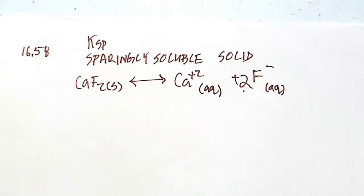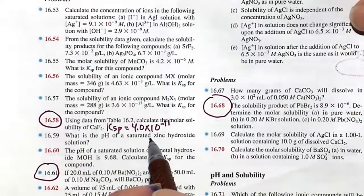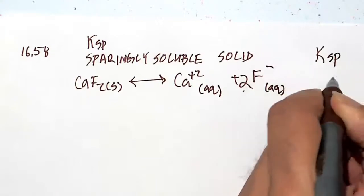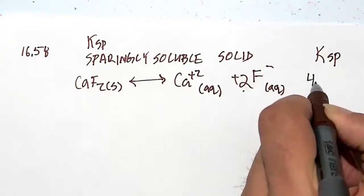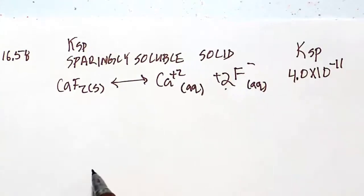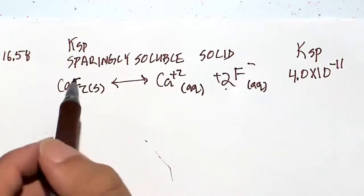There are no charges on the reactant side, so that is 0. So this is an equilibrium value or equilibrium constant called Ksp. It's the same capital K equilibrium constant that we've seen before. And we got that value from the book of 4.0 times 10 to the minus 11.